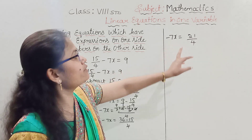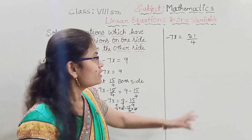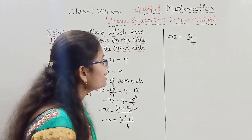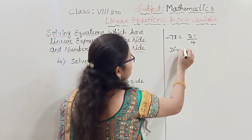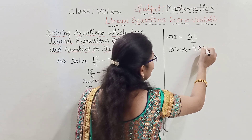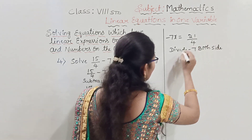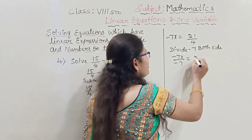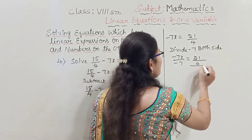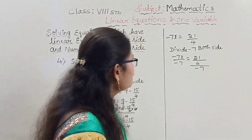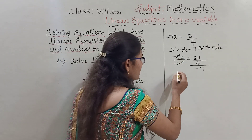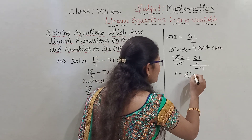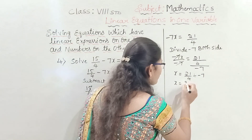We now have to remove minus 7. The relationship between x and 7 is multiplication, so we divide both sides by minus 7. Minus 7x divided by minus 7 equals 21 by 4 divided by minus 7. The minus 7's cancel on the left.